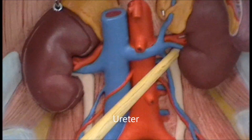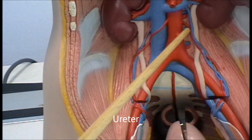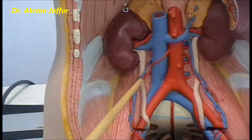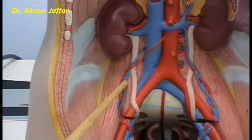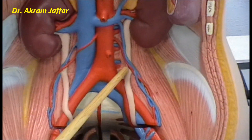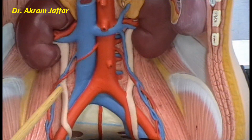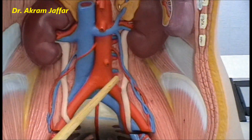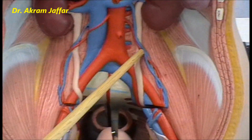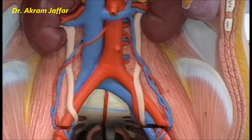The ureters extend down from the renal pelvis. They also receive small branches from the gonadal arteries to supply them. There are multiple arteries that supply the ureter; one set of these comes from the gonadal arteries.